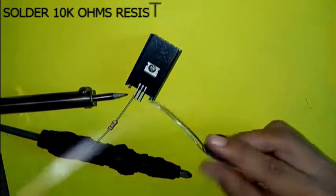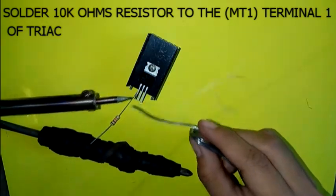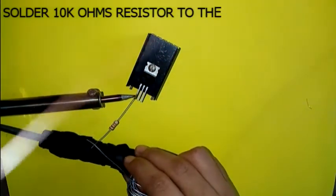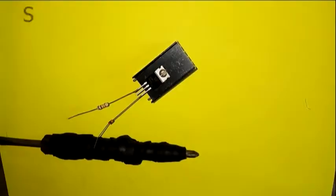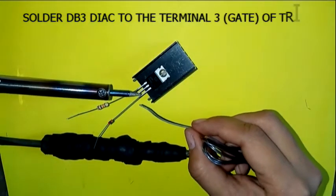Solder the 10kΩ resistor to the MT1 or Terminal 1 of triac. Solder the DB3 diac to Terminal 3 or Gate of the triac.